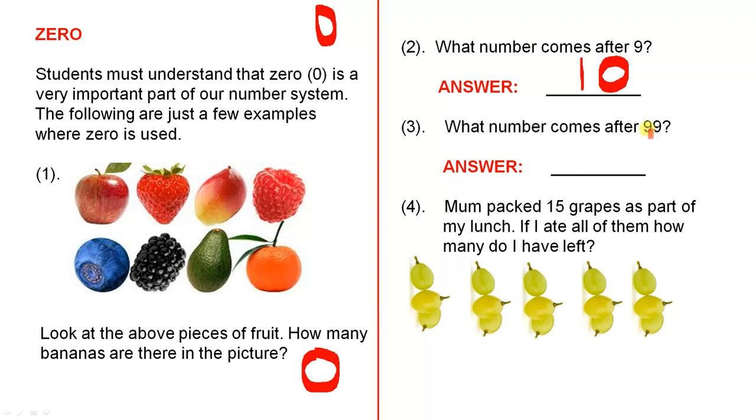Even with this one here, what number comes after 99? If you were to count from 1 to 99, your next number would be 100. In other words, you need two zeros to write the number 100. So you can see how 0 is very important.